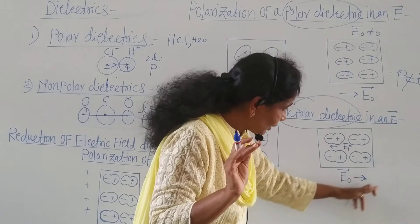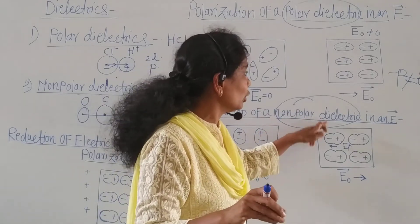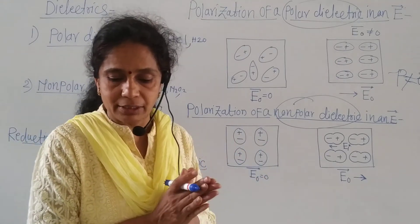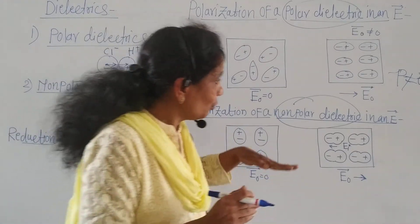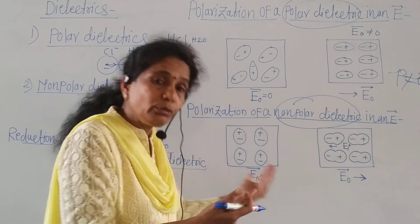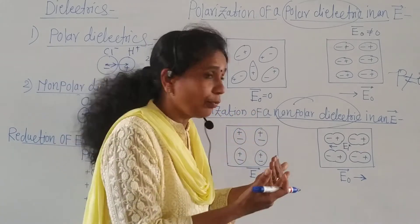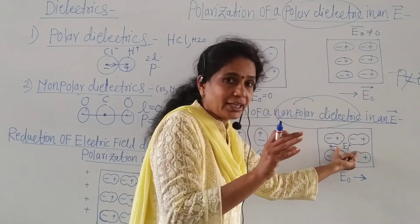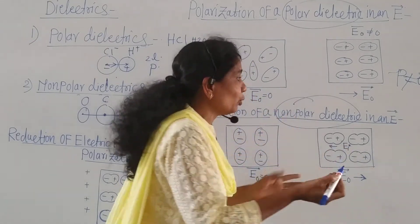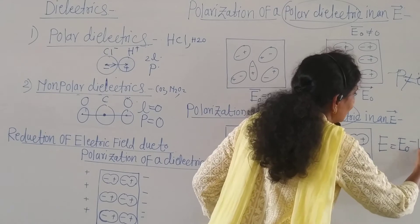Then, in the presence of an external electric field, when we apply the external electric field to the non-polar dielectric, the center of the positive charge is pushed in the direction of the external electric field and the negative charges move in the opposite direction. As a result, an induced electric field EI is produced internally.